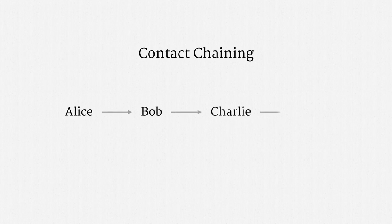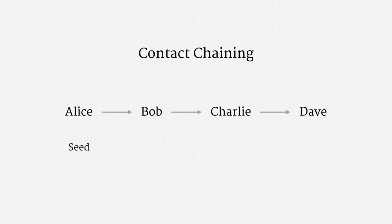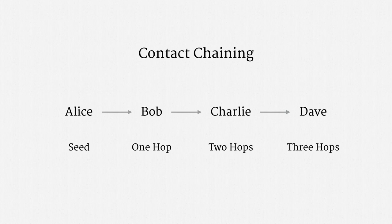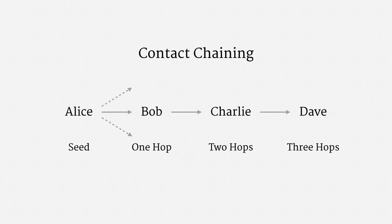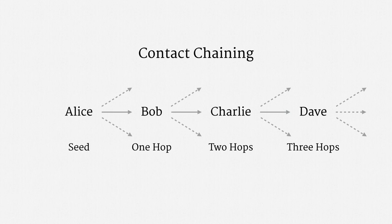Let me explain how contact chaining worked. Suppose Alice emailed Bob, who emailed Charlie, who emailed Dave. Imagine that Alice is a target in the metadata surveillance program. In NSA jargon, Alice's email address would be the seed query. Bob would be one hop away, Charlie would be two hops away, and Dave would be three hops away. After targeting Alice, the NSA would not just have access to Alice's email metadata — it would also have access to Bob's, and Charlie's, and Dave's. And that's just one path for contact chaining. Alice has presumably emailed with lots of other people, as has Bob, and Charlie, and Dave too. So with contact chaining, it's easy to see how a single target can exponentially grow into a huge data set.